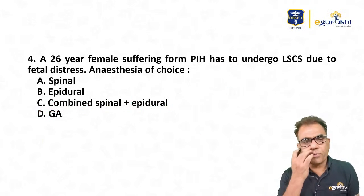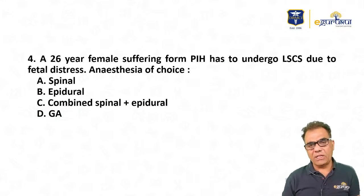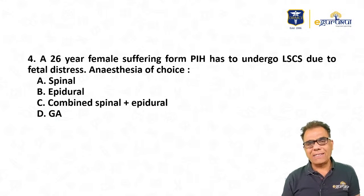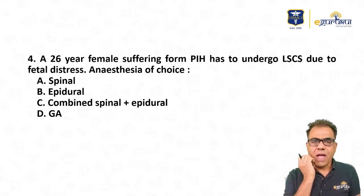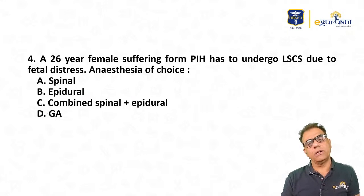Question number 4: A 26-year-old female suffering from PIH has to undergo LSCS due to fetal distress. Anesthesia of choice — spinal, epidural, combined spinal-epidural, or general anesthesia?